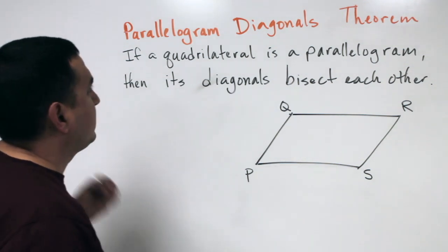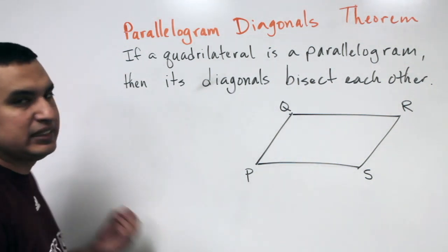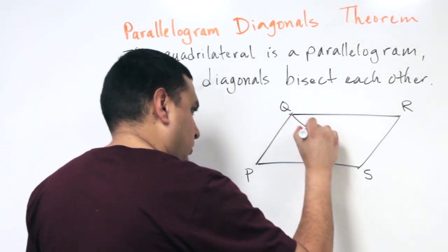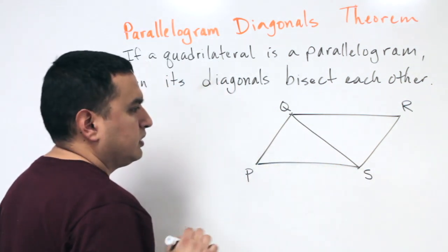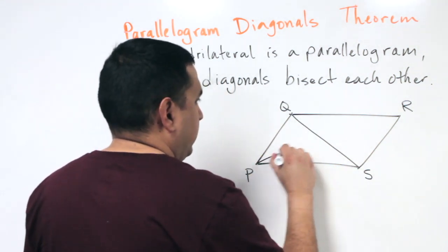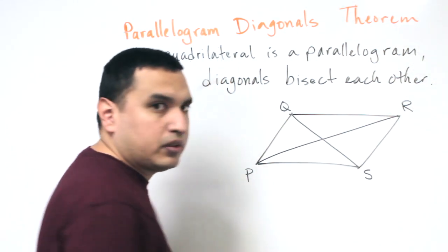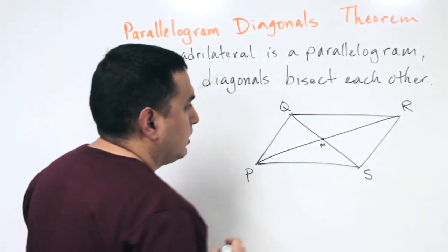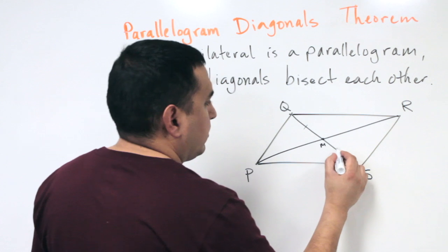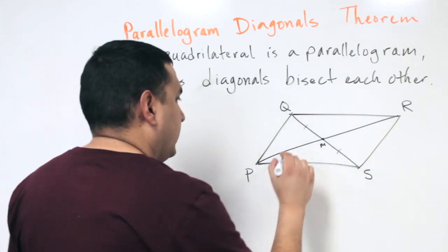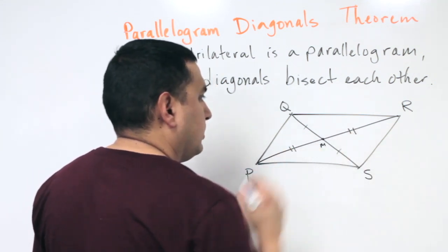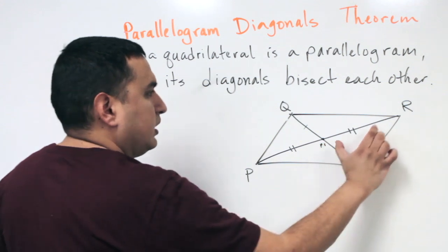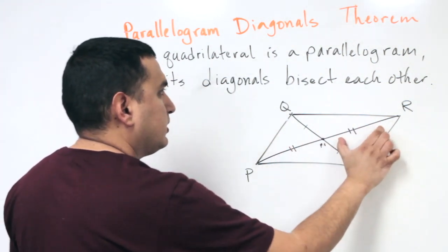The parallel diagonal theorem says that if a quadrilateral is a parallelogram, then its diagonals bisect each other. The diagonals connect opposite vertices — so Q connects to S and P connects to R. Those diagonals intersect at some point, which we'll call M. That tells me QM is congruent to SM, and PM is congruent to RM. So each piece of one diagonal is congruent to the opposite piece, and the same for the other diagonal.